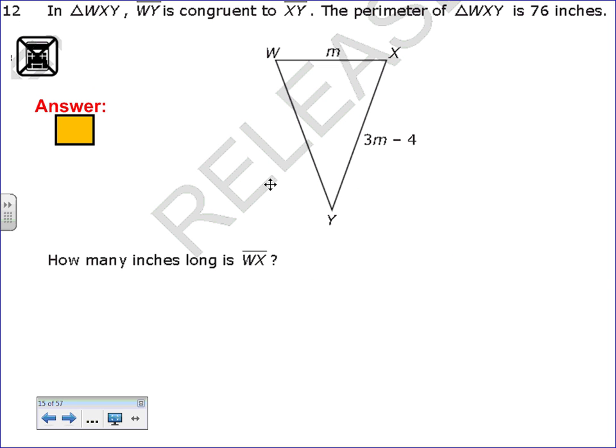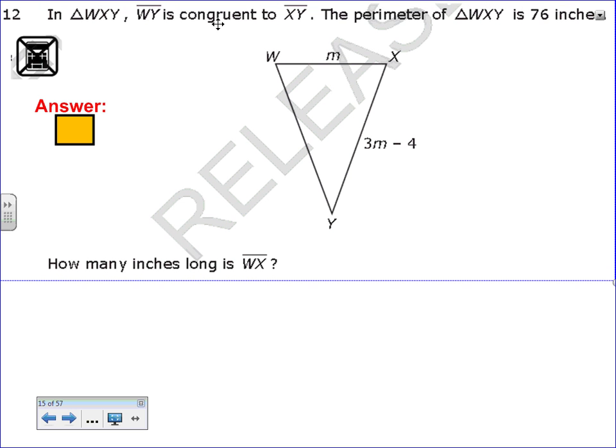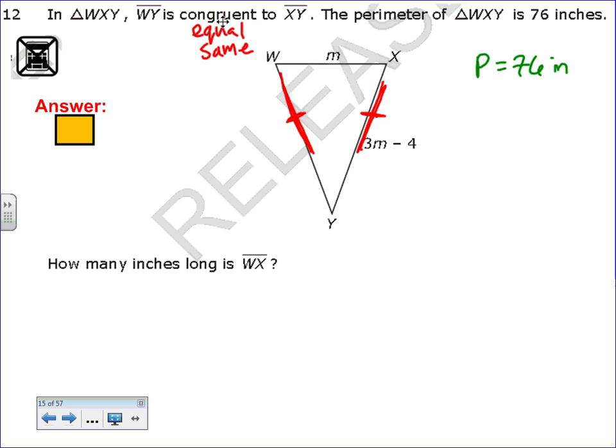Number 12. It says that in triangle WXY, line segment WY is congruent to line segment XY. The perimeter of the triangle is 76 inches. So this side and this side are the same. I'm going to put a little mark there to let me know those two sides are equal. The perimeter is 76 inches. To find the perimeter, you add up all the sidelines.